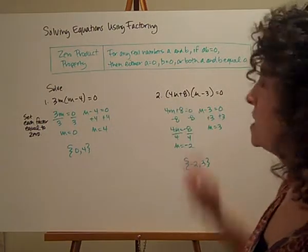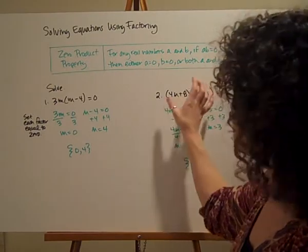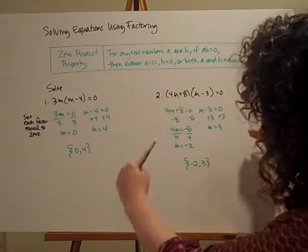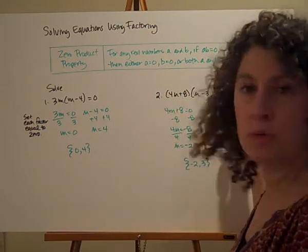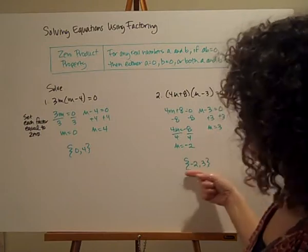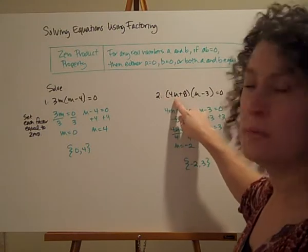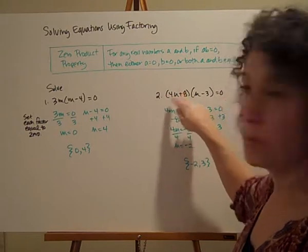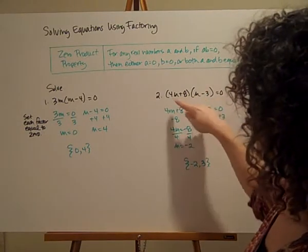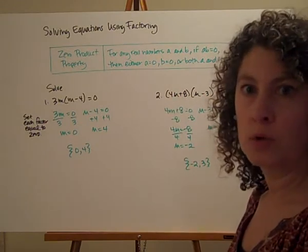Next one is a little more complicated because I have two binomials. Notice I've got a binomial times a binomial, two factors, and when I multiply them together I get a product of zero — which means either factor could be zero. So I break this up: four m plus eight equals zero, and m minus three equals zero. Solving each gives m equals negative two and m equals three. Checking: four times negative two is negative eight, negative eight plus eight gives zero, so that's zero times negative five, which is zero. Plugging in three gives 20 times zero, which is zero. Two solutions: negative two and three.